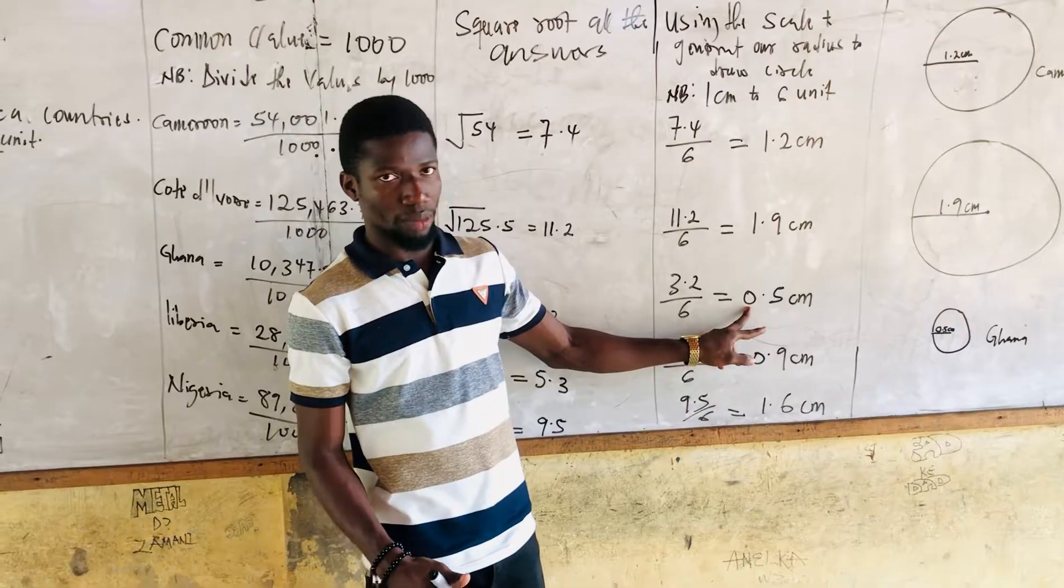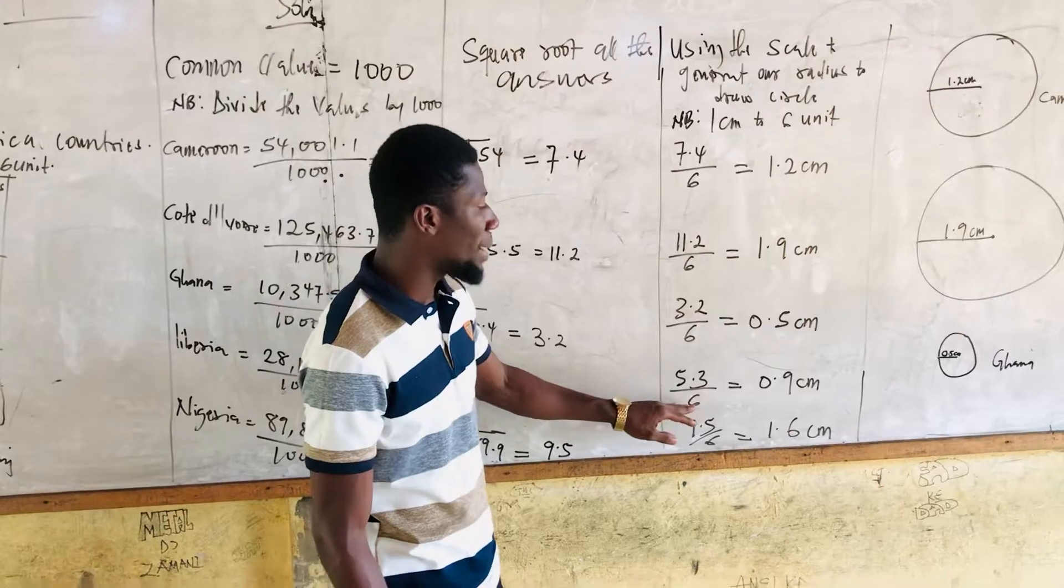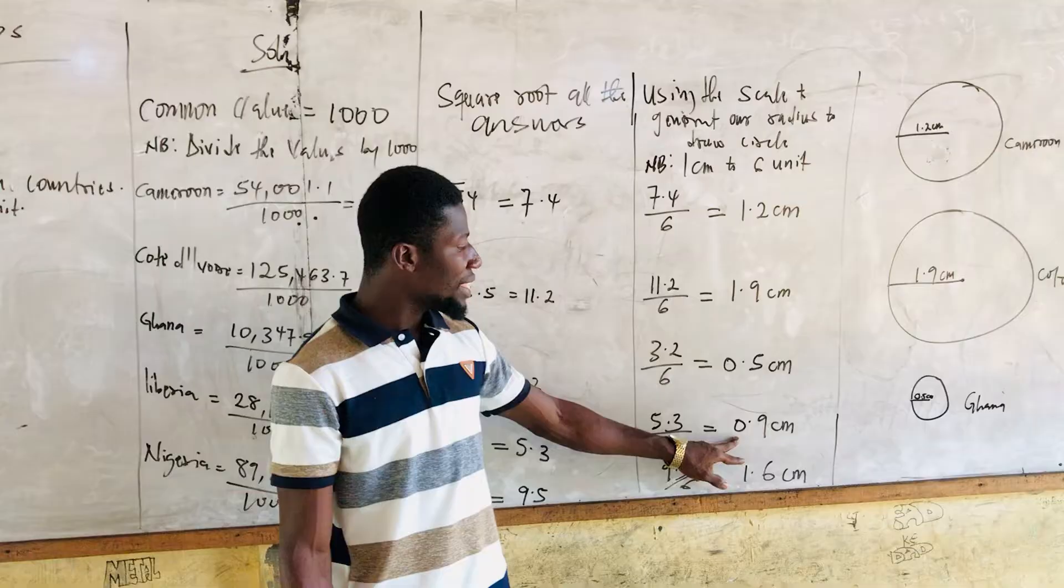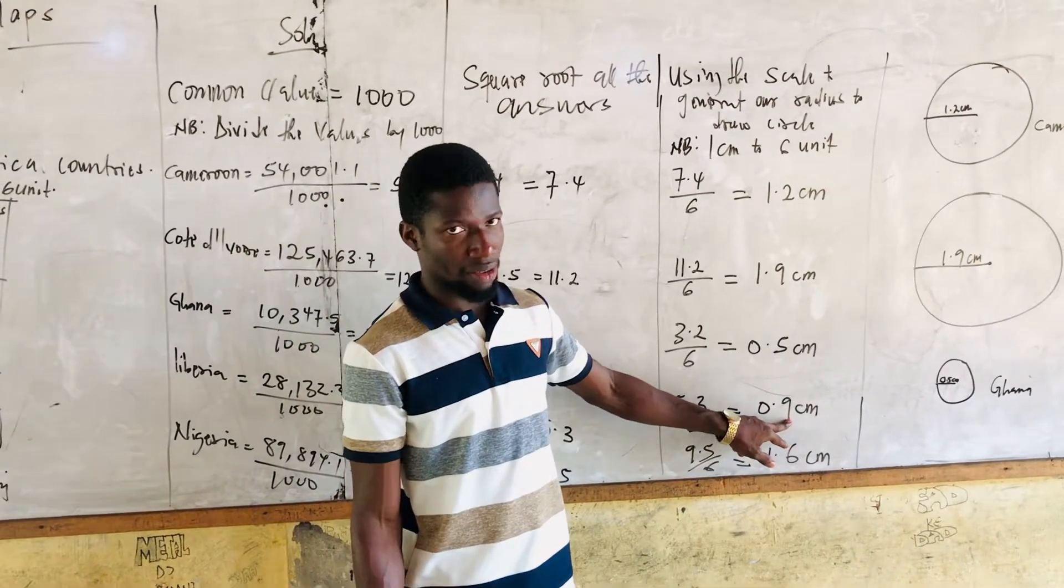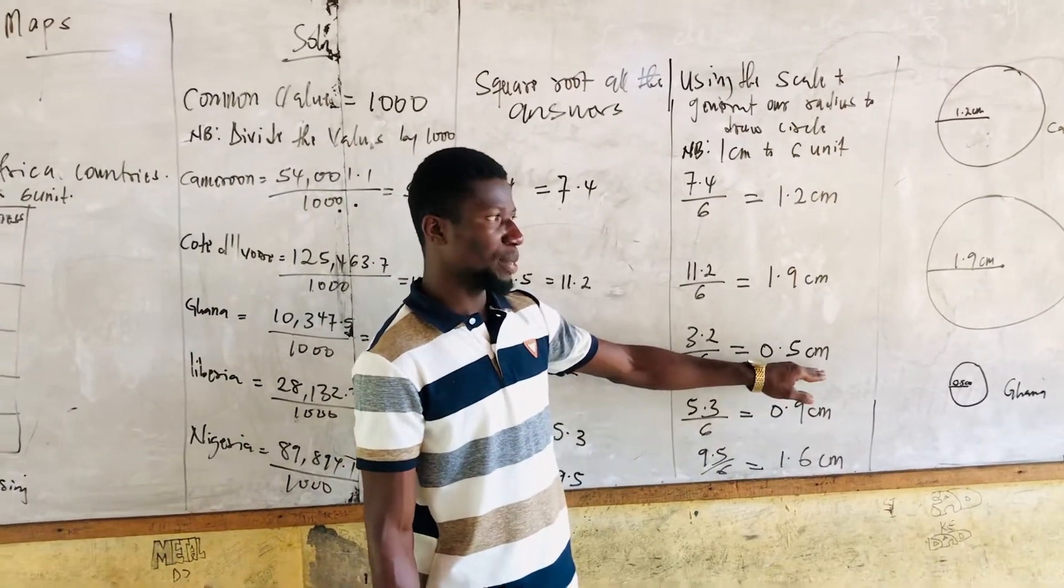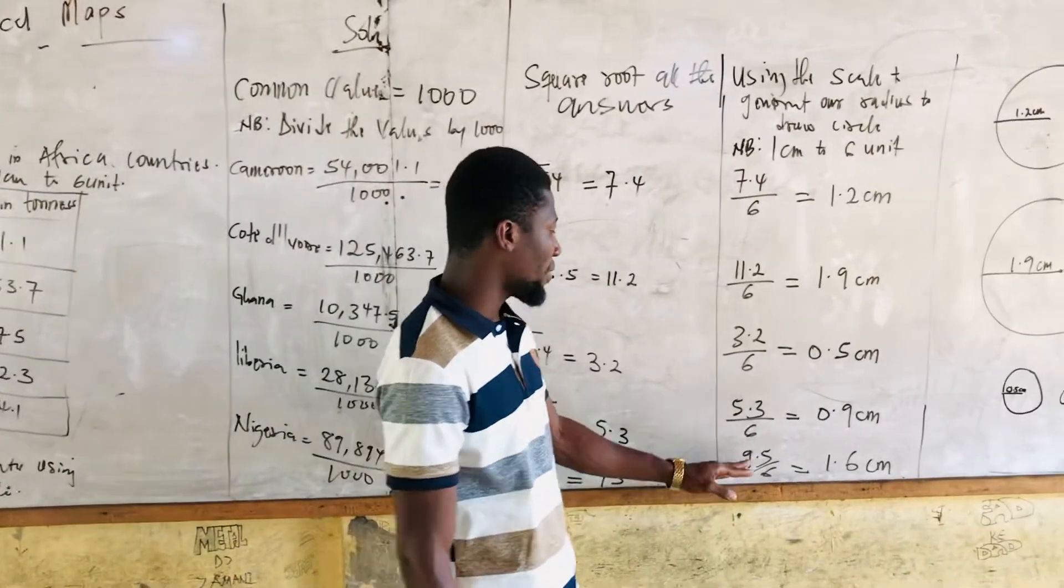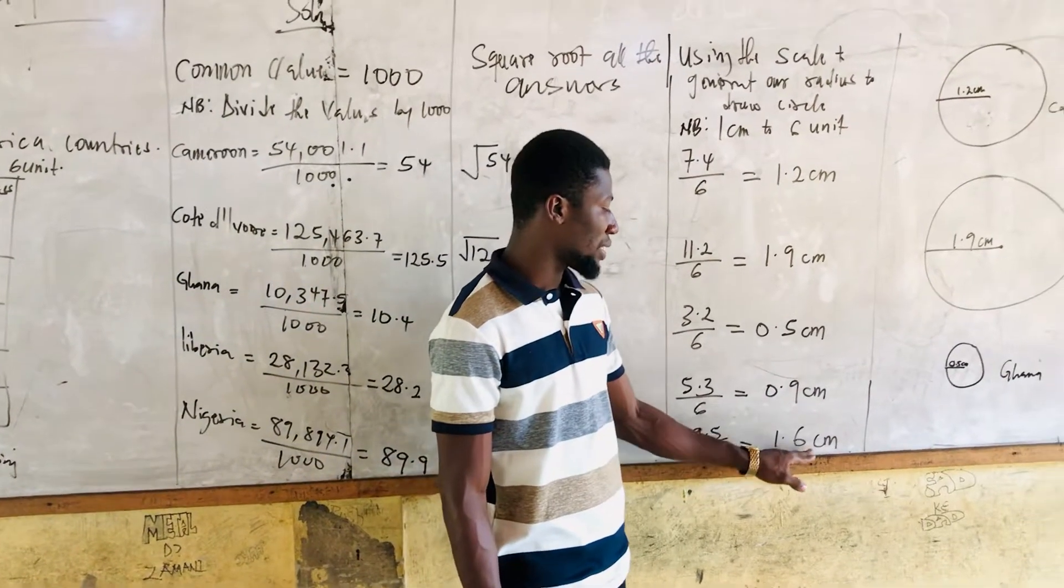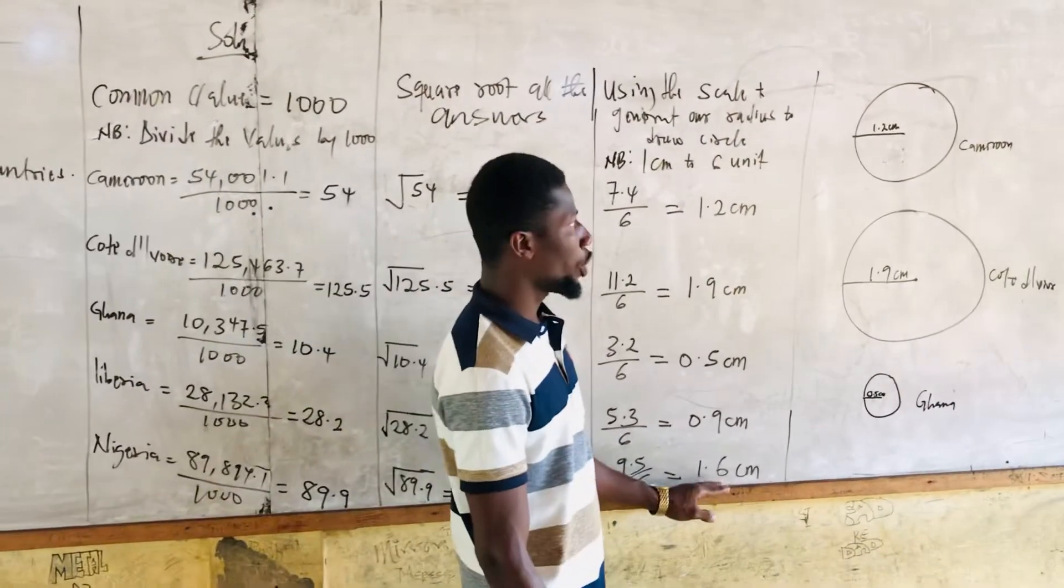This 5 here is not 5 centimeters, but it represents millimeters. We divide 5.3 divided by 6, and we are getting 0.9 centimeters. The zero represents centimeters and 9 represents millimeters. So we are going to choose 9 millimeters to draw, and 5 millimeters to draw. When we come to Nigeria, we are having 9.5 divided by 6, giving us 1.6 centimeters. Based on this, we are going to draw our circles.